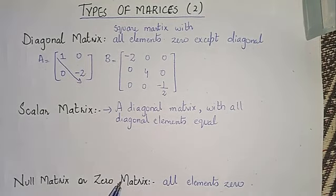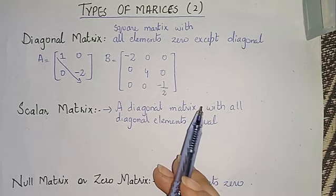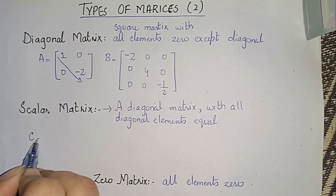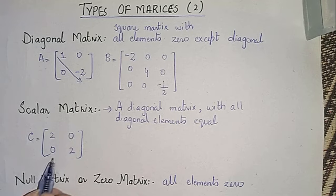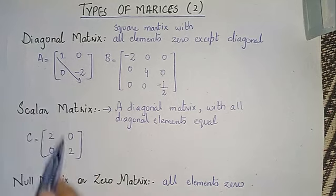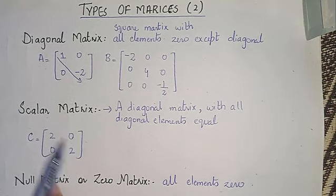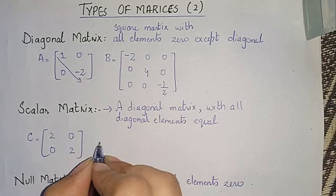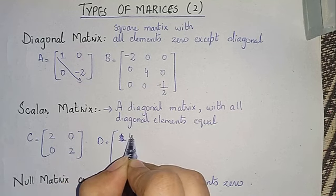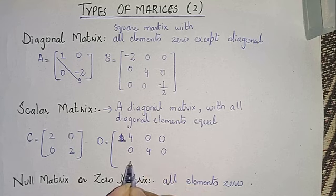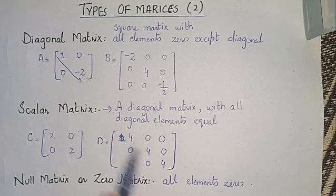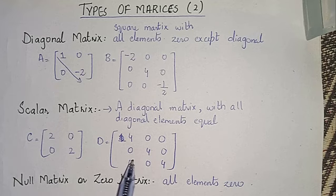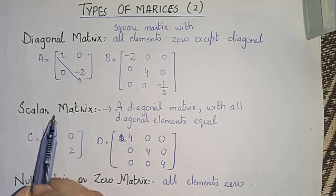Now, scalar matrix. A scalar matrix is a type of diagonal matrix, but with an additional condition: the diagonal elements must all be equal. For example, the matrix [2, 0; 0, 2] — this is a diagonal matrix where the diagonal elements are both 2, so we call it a scalar matrix. Another example: a 3x3 matrix with 4 on all diagonal positions and 0 elsewhere. The diagonal elements are all equal, so this is a scalar matrix.